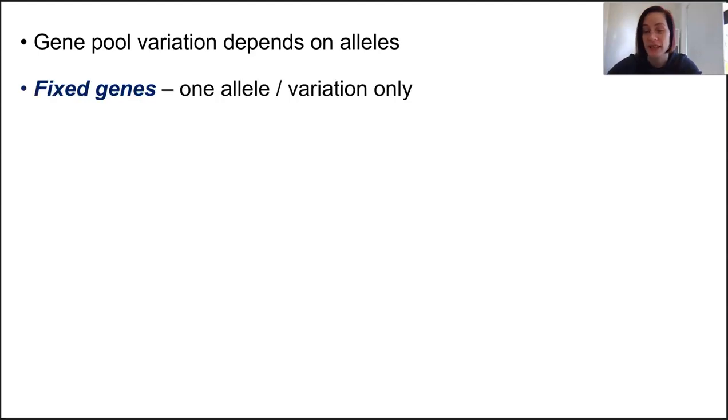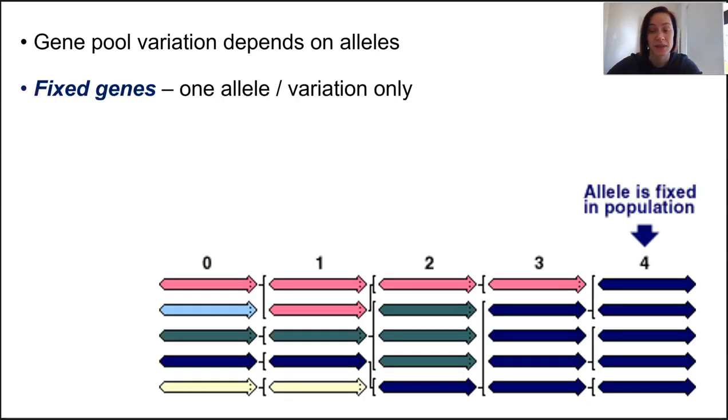The range of variation available in a gene pool depends on the range of alleles present for each individual gene. If genes only have one possible variety available, just one, then that obviously can't contribute to variation because everyone has the exact same trait. These are known as fixed genes and about 80 to 85 percent of our genes are actually fixed. So we're relying on 15 to 20 percent of those genes to contribute variation to our species and therefore how our species evolves.